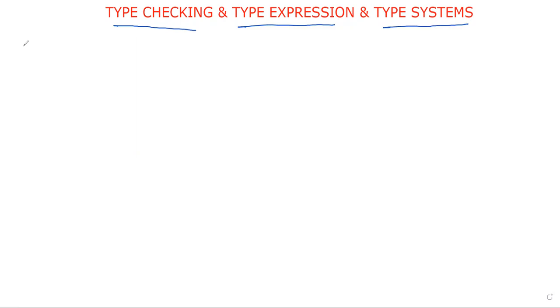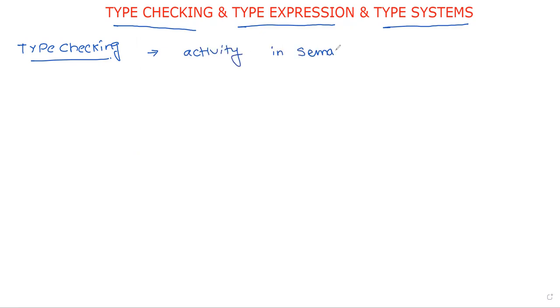Welcome to our channel. In this session we will discuss type checking, type expressions, and type systems. Type checking is an important activity in the semantic analysis phase. We already know the different phases in compilation — in the semantic analysis phase, type checking is the most important activity.